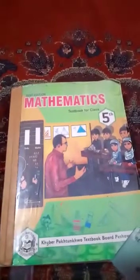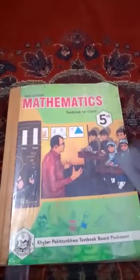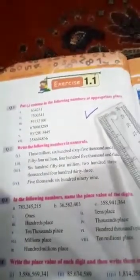Bismillahirrahmanirrahim. Dear students, assalamu alaikum. This is your mathematics book of class 5. Now open your book to page 8, exercise 1.1, question number 1: put comma in the following numbers at the appropriate place. Now students, how will we do it?